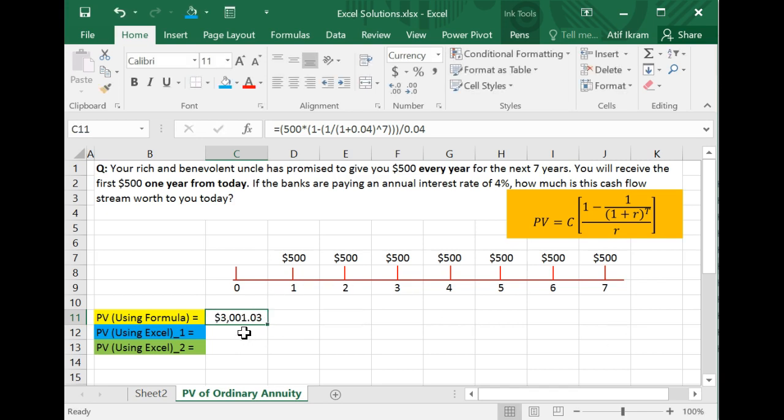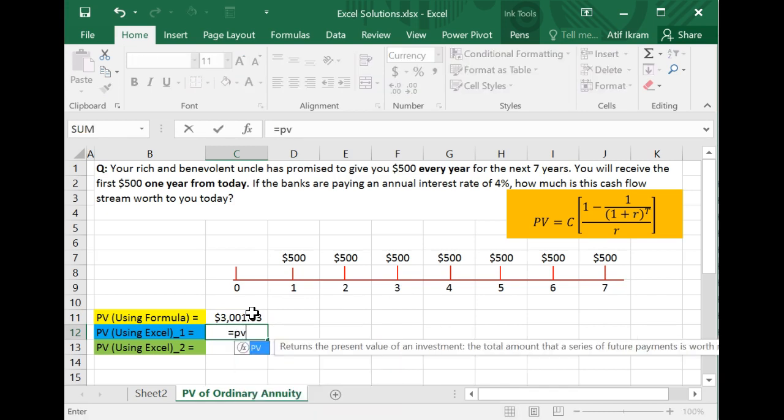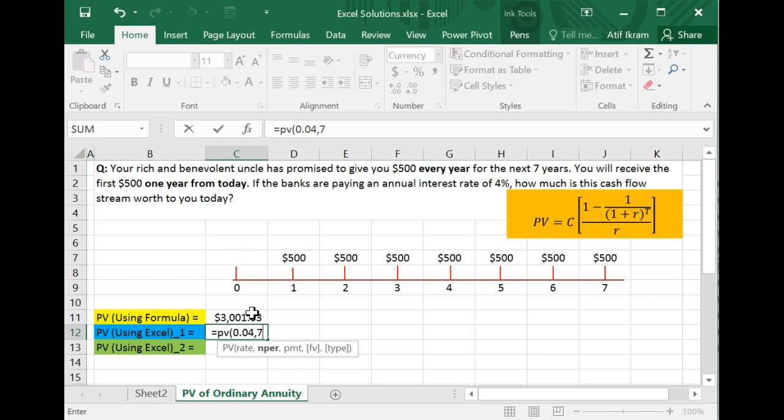One way in which you could do this using Excel is this. You might recall seeing a present value function. If you invoke this present value function or present value formula in Excel and you open the bracket, it says first tell me what is the interest rate. That's easy, that's 4%. So 0.04. Number of time periods, NPER, how many time periods are we dealing with here? Seven.